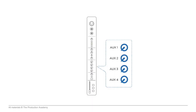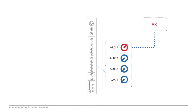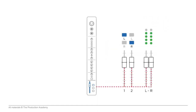One of the outputs we have are aux sends, which are found right on the channel strip. These pick off the signal and feed things like monitors or effects. Or the channel can be assigned to groups, or directly to the main left-right mix.